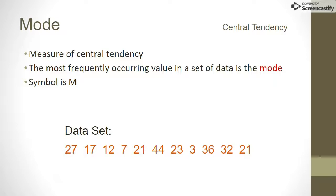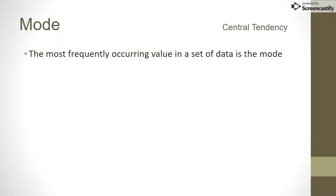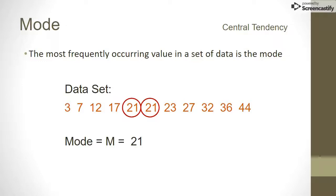Another measurement of the central tendency of a data set is the mode, which is the most frequently occurring value in the data set. The symbol for mode is capital letter M. In this set of data, the number 21 occurs twice. Every other data value has only one occurrence, therefore 21 is the mode.